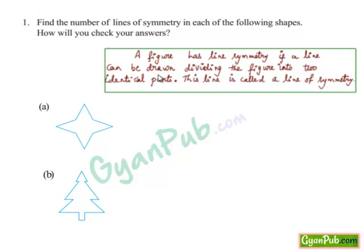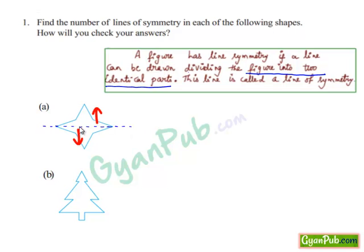Here they have clearly mentioned that if a line can be drawn dividing the figure into two identical parts. Let's draw a line to check whether this object has a line of symmetry or not. A horizontal line is dividing the object into two identical parts — the object above the line is the same as the object below the line. Hence it is a mirror image, and therefore this line is considered the line of symmetry.